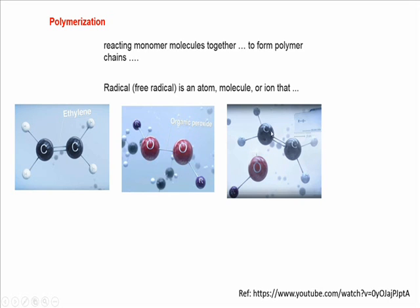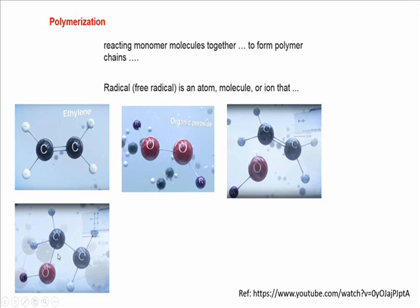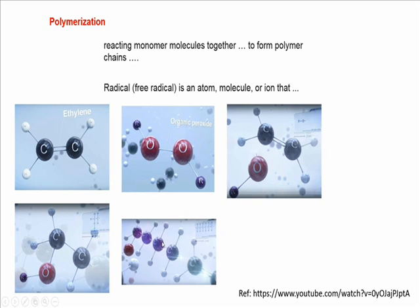So, the peroxide, if it's in contact with the ethylene, this double bond is broken and then we will have a new repeat unit, as you can see here. Of course, now this carbon has a free hand or free electron valence. So, it's looking for another unit to bond. This process is continuing, as you can see.